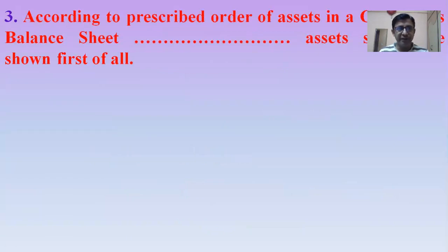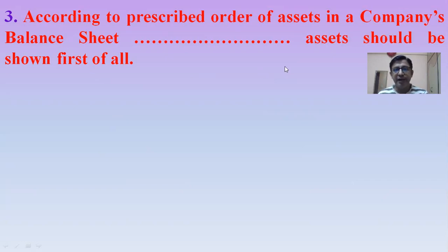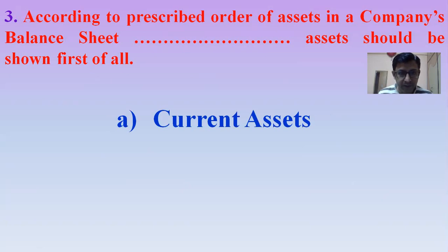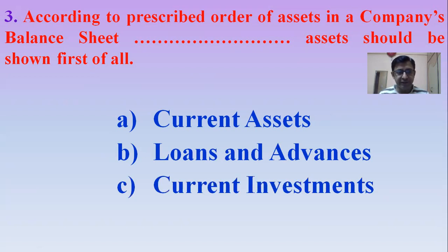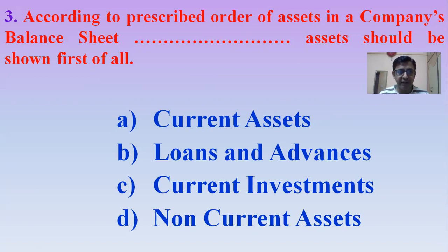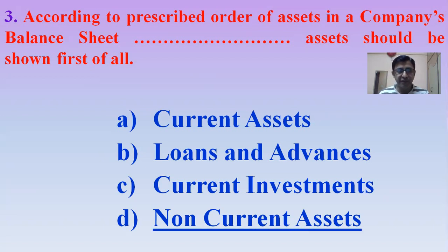Next MCQ: According to the prescribed order of assets in a company's balance sheet, which assets should be shown first? Options: Current assets, Loans and advances, Current investments, or Non-current assets. The right answer is Option D — Non-current assets. The first head on the asset side is Non-current assets, followed by the other main head called Current assets.